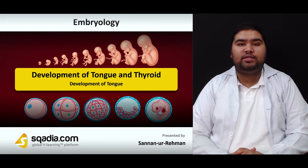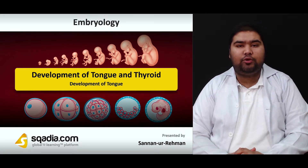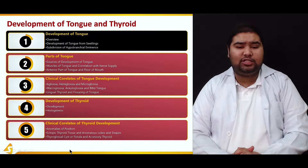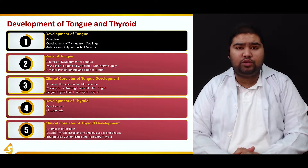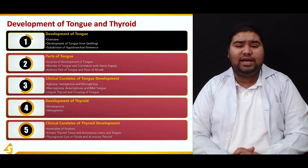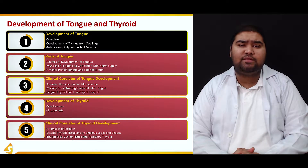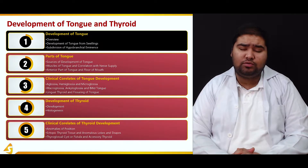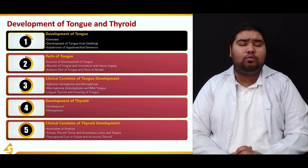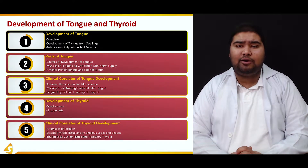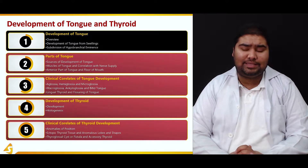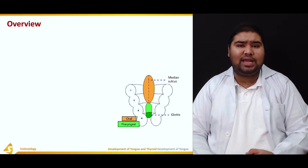Hello everyone, we are talking about the development of tongue and thyroid, and in this section we will talk about the development of tongue. There are three further components to this section: first, an overview of how the tongue develops in human fetuses; second, various swellings developing in the oral region that contribute to the adult tongue; and finally, what the hypobranchial eminence is and how it divides and contributes to the adult tongue.